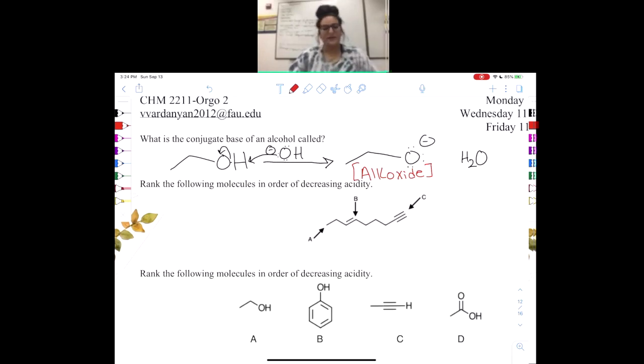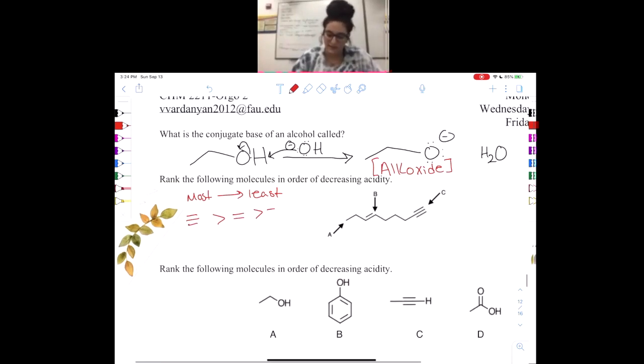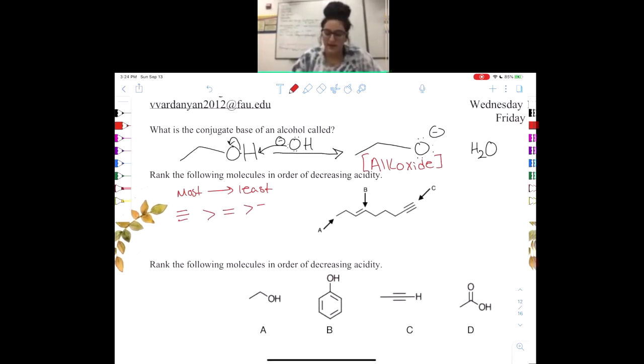So next up, something to review from Orgo 1 is acidity of different types of bonds. So a single bond is going to be less acidic than a double bond, which is then less acidic than a triple bond. So if we go from most to least acidic, your triple bond will be the most acidic, and then our double bond, and finally our single bond. With that being said, if we look at this molecule, the hydrogen here on A will be the least acidic. The hydrogen on B will be in the middle, and then the hydrogen coming off here on C will be the most acidic. So C, B, A.